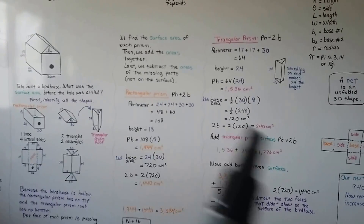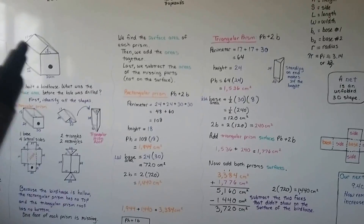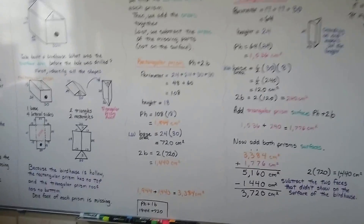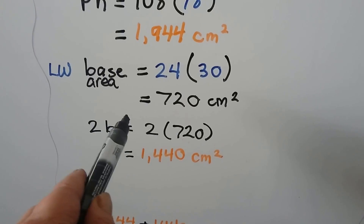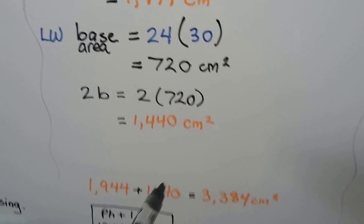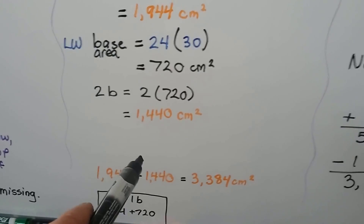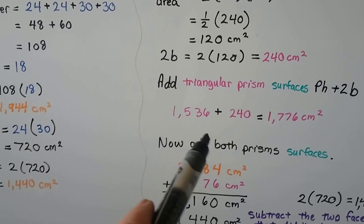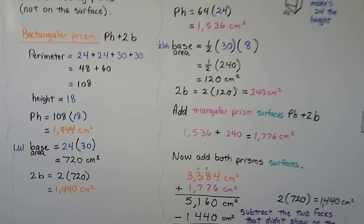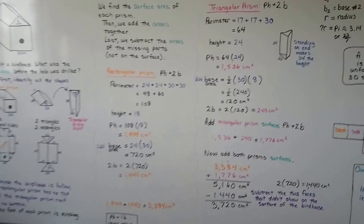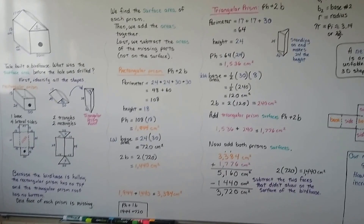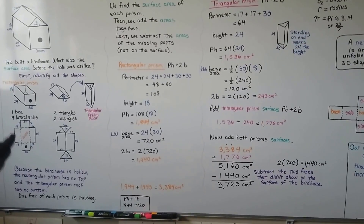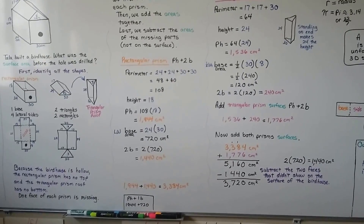We did each prism separately, and then at the end we subtracted the parts that were missing. Technically, since we knew the top was missing, we could have taken the 720 away from the rectangular prism right away — and similarly for the triangular one. But it's a lot easier when dealing with multiple surface areas to find the full surface area of the whole prism first and then subtract what was missing. It's also easier than calculating each separate little area for each part of the net.